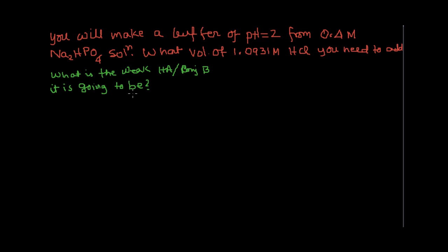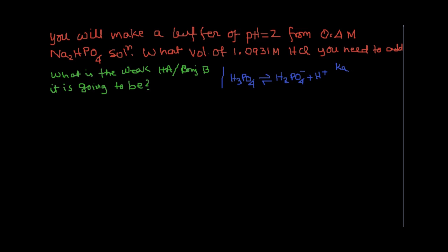To make an effective buffer from Na₂HPO₄, which is really one form of phosphoric acid, we need to look at the different forms of phosphoric acid and which form we are going to use. Phosphoric acid, as we know, is a tribasic acid. H₃PO₄ in aqueous solution is going to dissociate to give H₂PO₄⁻ and H⁺. And the Ka value of this acid — let me make a little chart so we can differentiate between these different lines.